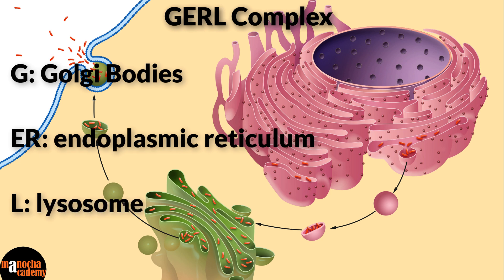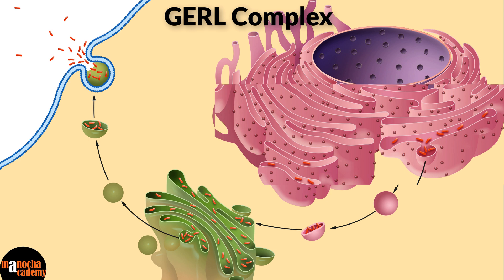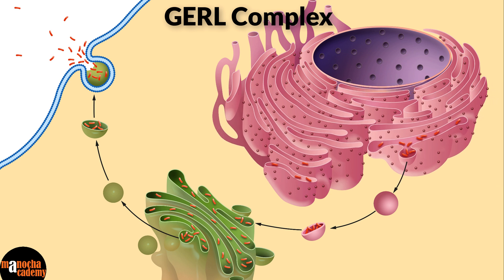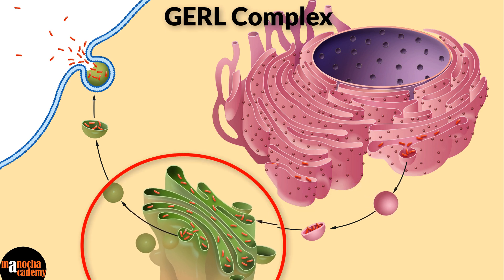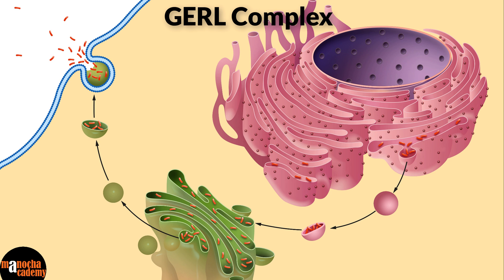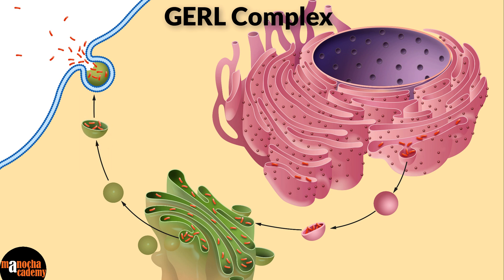It is a complex because these three structures work in coordination with each other. The endoplasmic reticulum forms the primary protein, carbohydrate, and lipid structures, which are sent to the Golgi bodies. The Golgi bodies modify these proteins and give them their final, modified, active form. Some of these proteins, which are enzymes, are then packed inside membranes to form lysosomes. These three structures are closely placed in the cell so they can communicate with each other, forming the GERL complex.